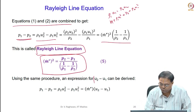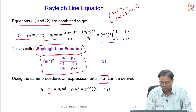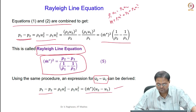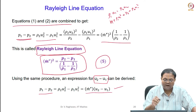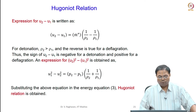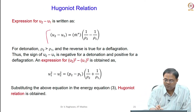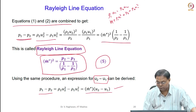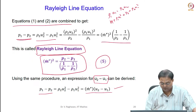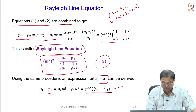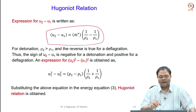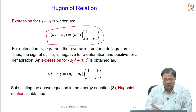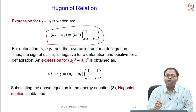From the same procedure we can evaluate u₂ minus u₁. We have P₁ minus P₂ equals m-dot-double-dash times (u₂ minus u₁). The Rayleigh line equation (equation 5) is very important. For detonation, ρ₂/ρ₁ is 1.7 to 2.6; for deflagration it is at most 0.25. So for detonation ρ₂ is greater than ρ₁, and for deflagration ρ₂ is less than ρ₁.